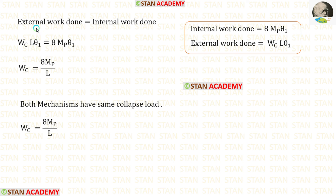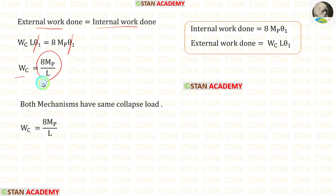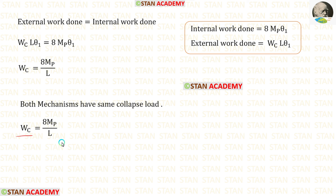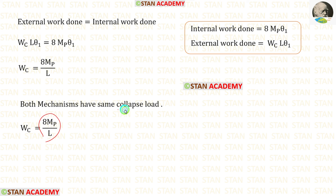Now let us equate the external work done and the internal work done. Cancelling theta 1, we get Wc equals 8 Mp upon L. From both mechanisms, we have to select the minimum value for Wc. In our case, the first and second mechanisms give the same value — 8 Mp upon L. So we take 8 Mp upon L as the collapse load. Now we are going to end this session. Thank you for watching this video.